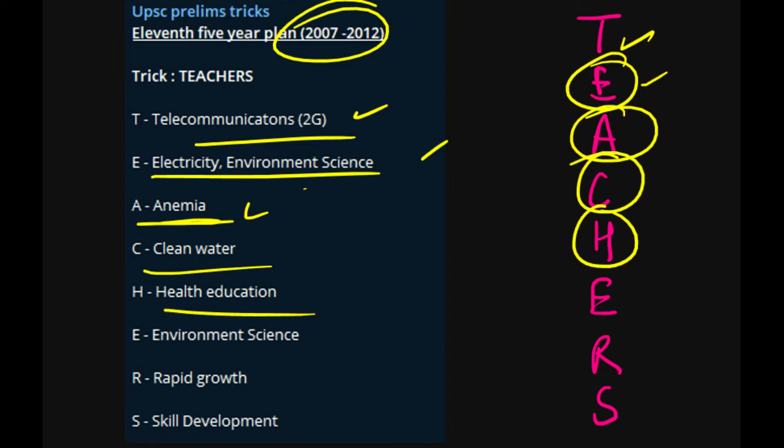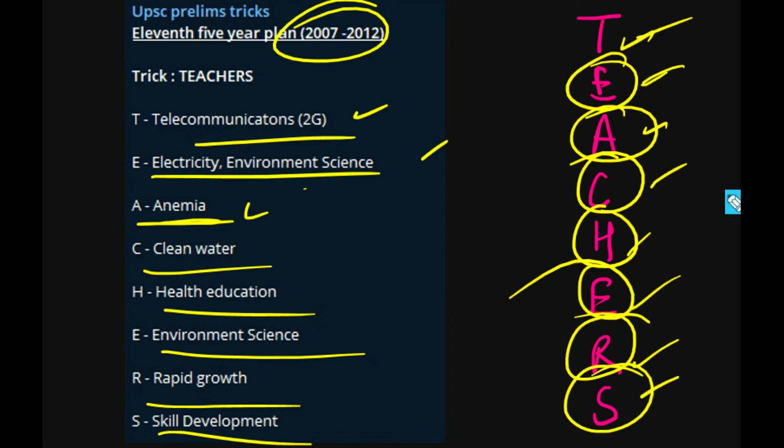H for Health Education - focus was on health education. E for Environment Science. R for Rapid Growth. S for Skill Development. These are the major themes: Telecommunication, Electricity and Environment Science, Anemia, Clean Water, Health Education, Environment Science, Rapid Growth, and Skill Development.